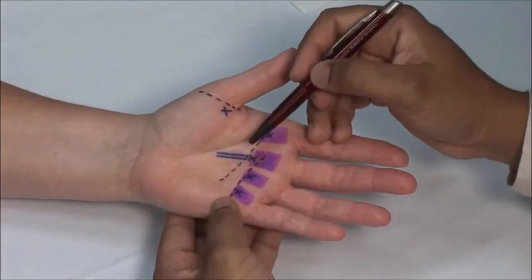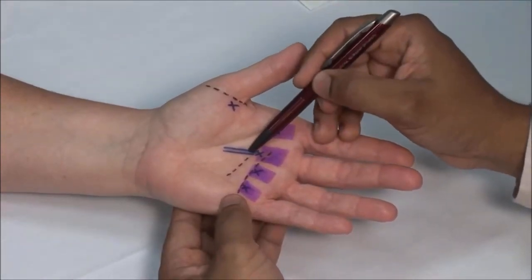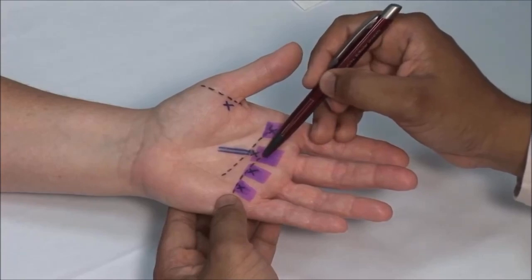Swelling and nodules along the tendon can cause trigger finger as the affected area gets caught at the A1 pulley.